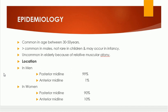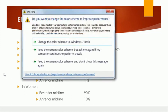When compared with young adults, it is uncommon in elderly patients. The reason is relative muscular atony in elderly patients. Regarding the site or location of the anal fissure: in men, in the majority of cases it is the posterior midline — ninety-nine percent.